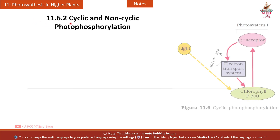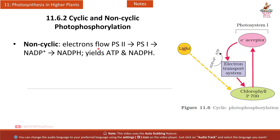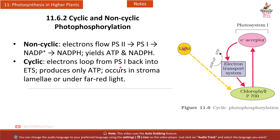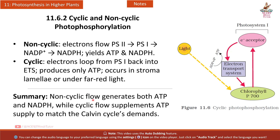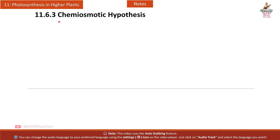Section 11.6.2 Cyclic and non-cyclic photophosphorylation: non-cyclic electron flow runs from PS2 to PS1 to NADP⁺, producing NADPH, and yields both ATP and NADPH. Cyclic flow loops electrons from PS1 back into the ETS, producing only ATP; it occurs in stroma lamellae or under far-red light. Non-cyclic flow generates both ATP and NADPH, while cyclic flow supplements ATP supply to match the Calvin cycle's demands.